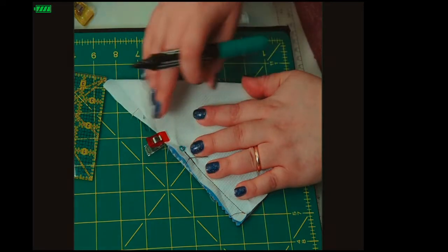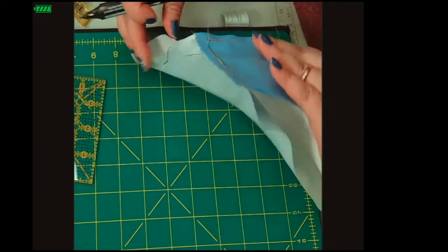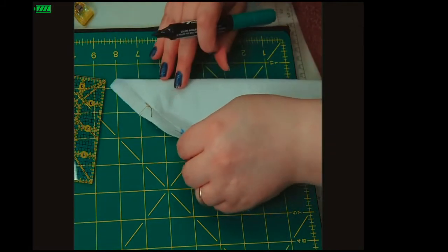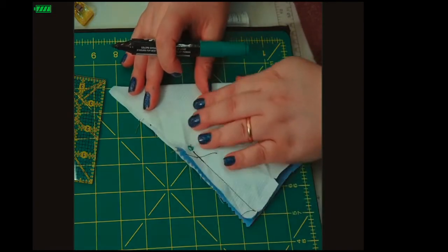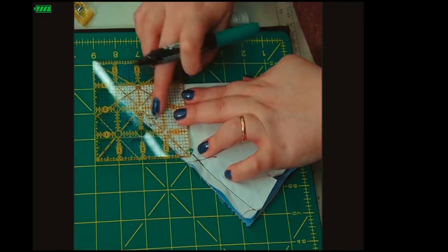So: dog ears, clip, make sure all raw edges are put together. Then you find the 45-degree angle on your ruler.